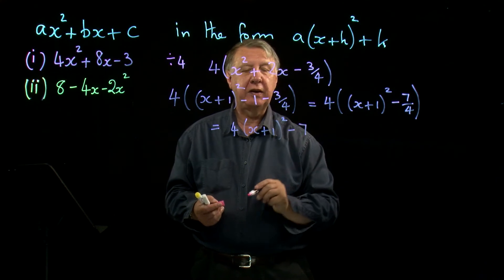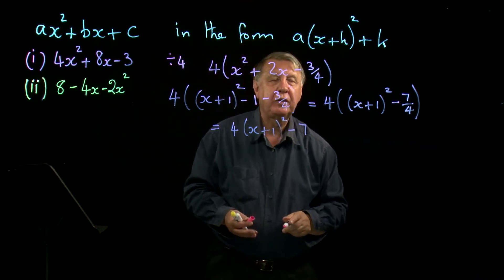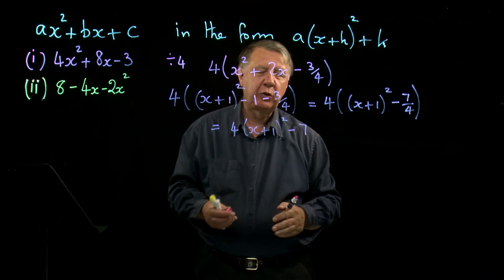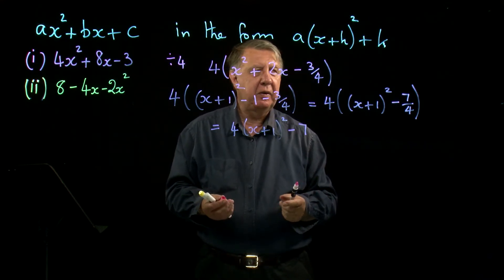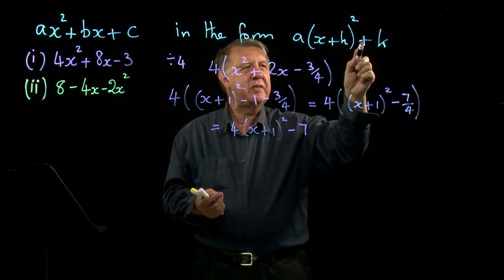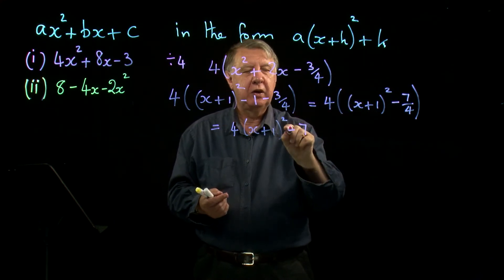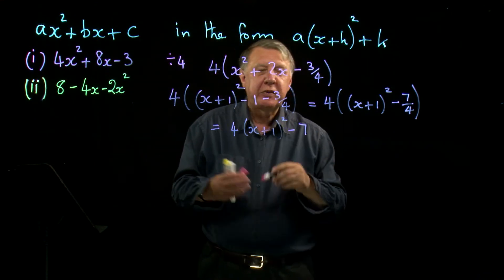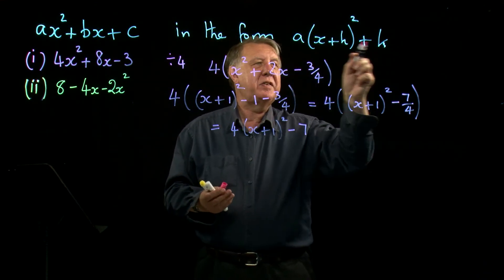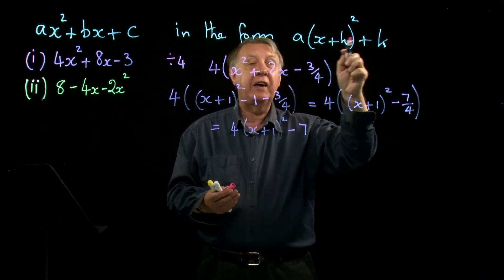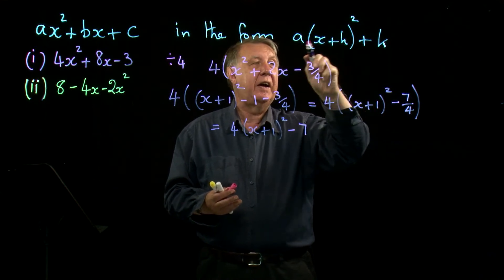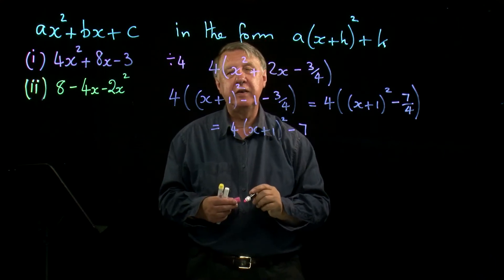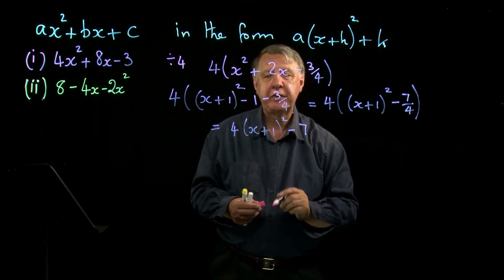So it's now in the form. Some people will say you haven't got it in the form because that says plus and you've got minus, but I would say well it doesn't tell me anything about what h and k are. It just says in that form. K could be negative, which of course it is in this example here. So that's the first one.